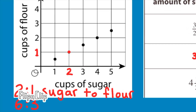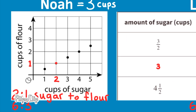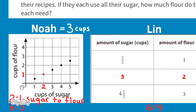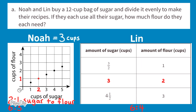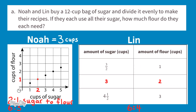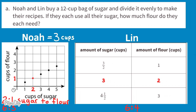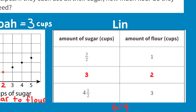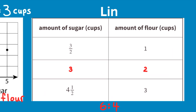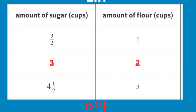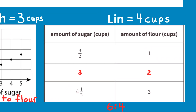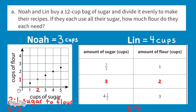Noah uses 3 cups of flour for every 6 cups of sugar. For Lynn: 3 cups of sugar × 2 = 6 cups of sugar, so 2 cups of flour × 2 = 4 cups of flour for every 6 cups of sugar. Lynn uses 4 cups of flour.